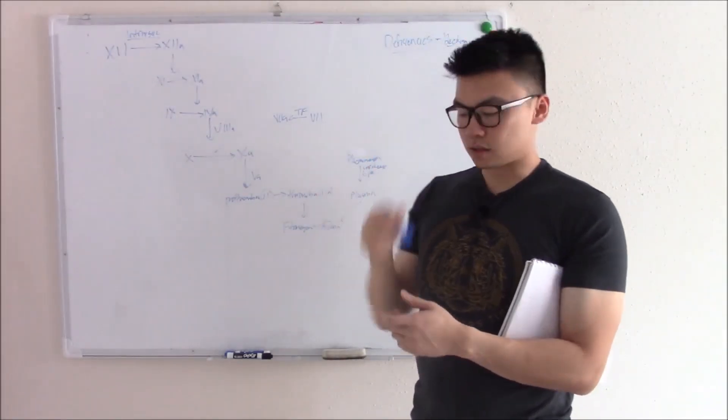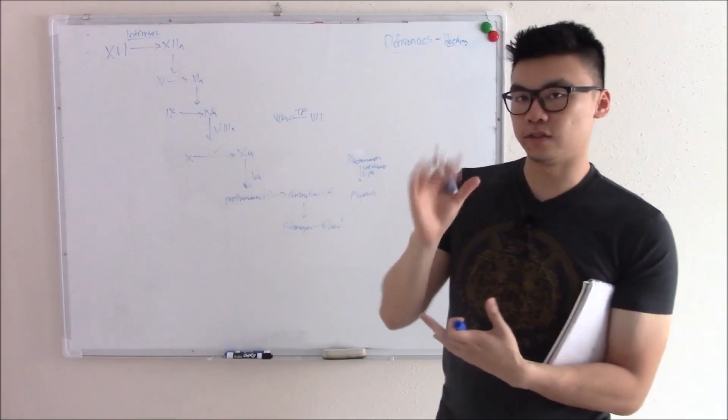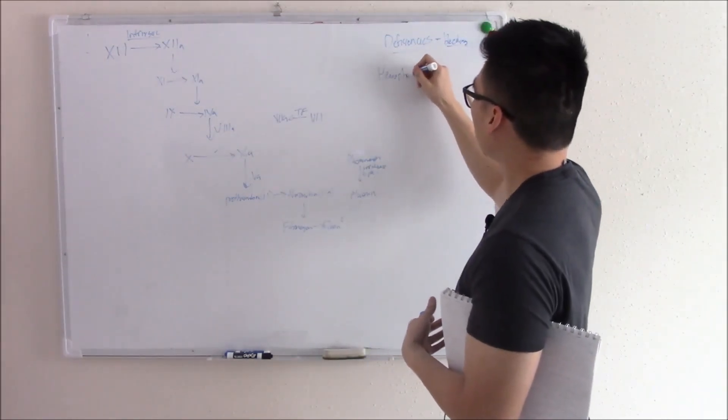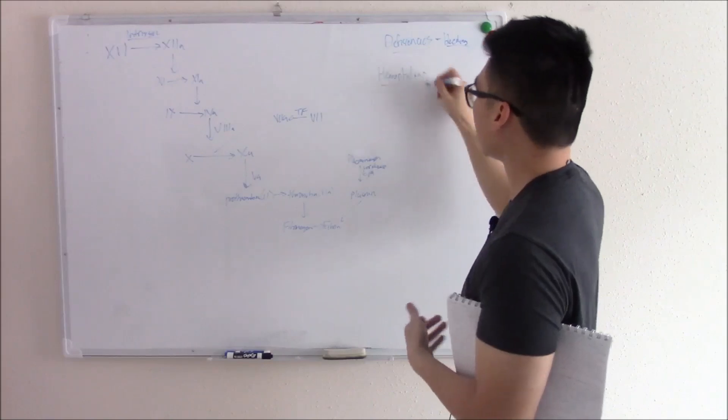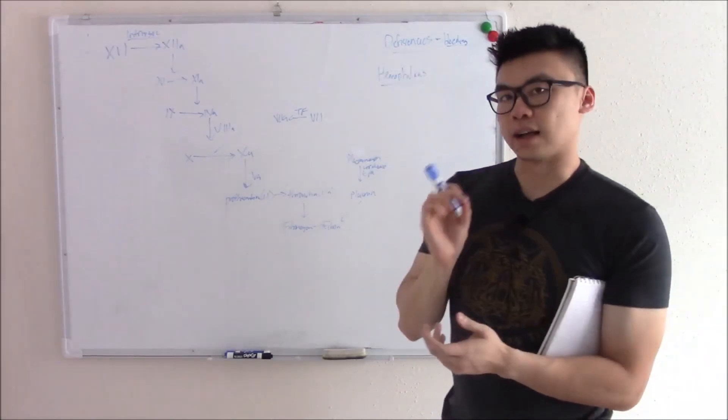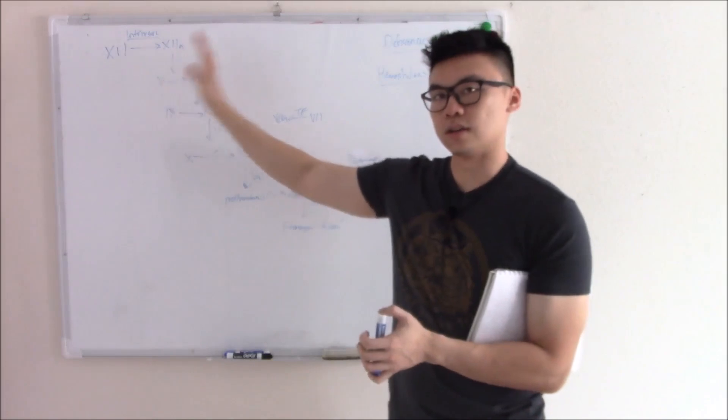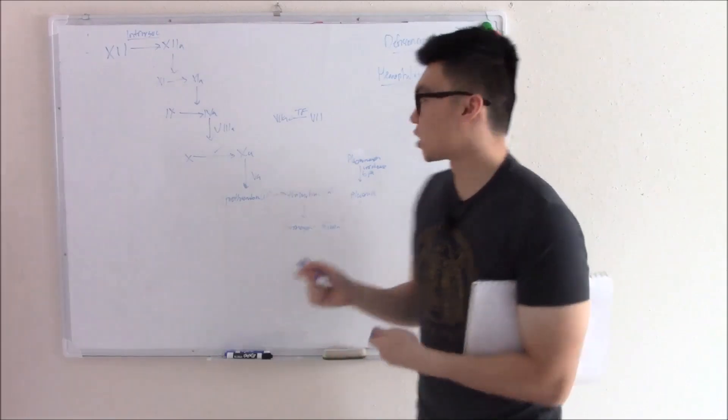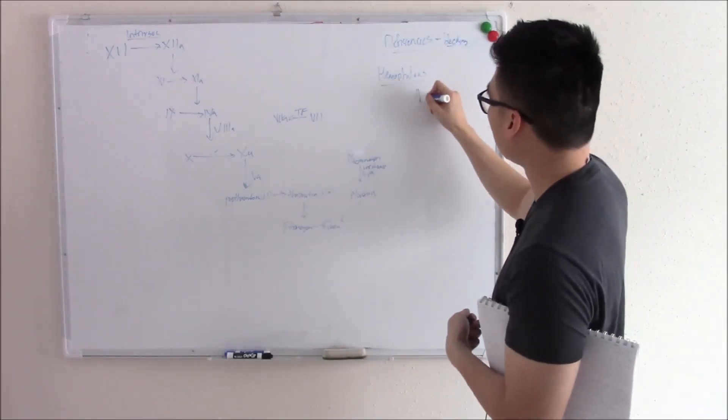The first couple of disorders I want to talk about is going to be in the hemophilia family. Hemophilias are inherited disorders, and it's a defect in the intrinsic pathway. You're not making certain factors in the intrinsic pathway. You can have hemophilia A, B, C.